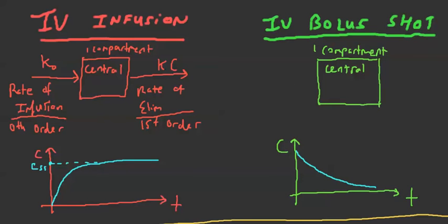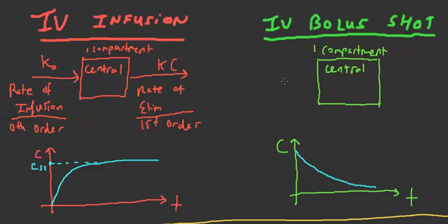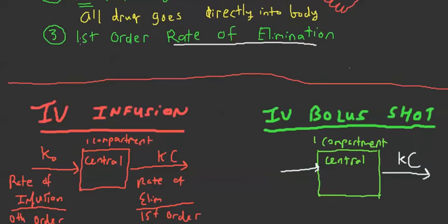Compared to IV infusion, IV bolus shot is pretty much the same thing except there's no infusion — no rate of infusion. The drug goes directly into the central compartment all at once, because it's just the needle shot. The only thing that happens after is that there's a rate of elimination, and like I said, the assumption is first order — so KC is the rate of elimination.